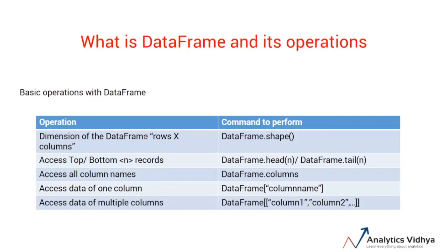Now let's have a look at some of the basic functions of a DataFrame. We can check the dimensions of the DataFrame — the number of rows multiplied by the number of columns — using the shape function. We can access the top and bottom records using the head and tail functions respectively. We can access all column names using the columns function. To access a particular column we use square brackets with the column name, and to access multiple columns we pass the column names inside a list.